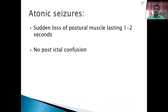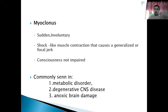Atonic Caesar is when there is a brief sudden loss of postural muscle tone — the patient just falls down. This condition is often misdiagnosed as a syncopal attack. Myoclonus is another type, where there are jerky movements; this is commonly seen in metabolic diseases, classically in uremia in a patient with CKD. So patients can have absence, generalized tonic-clonic, atonic, or myoclonic Caesar, as well as focal Caesar.